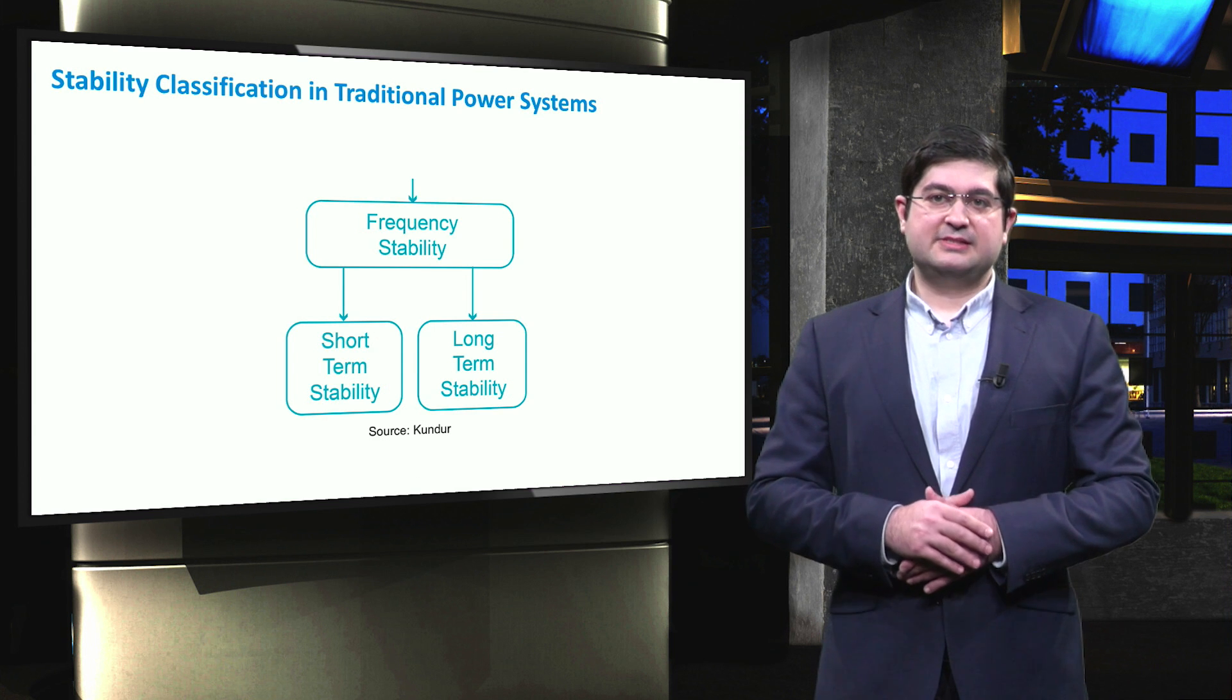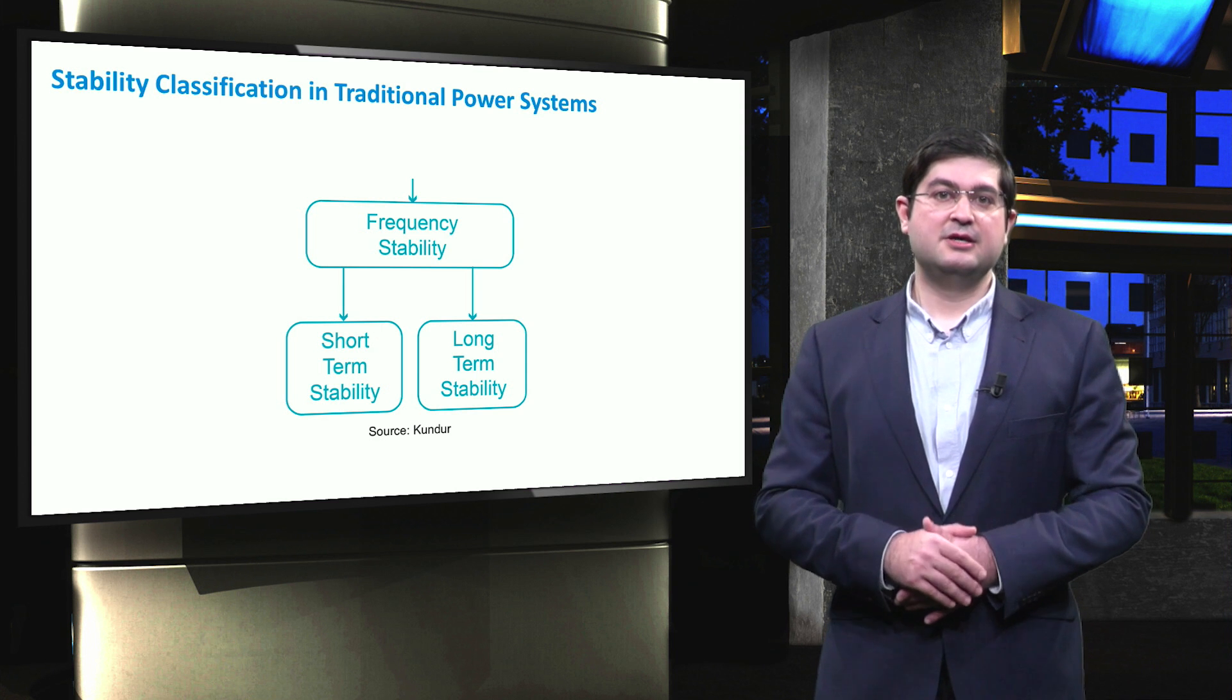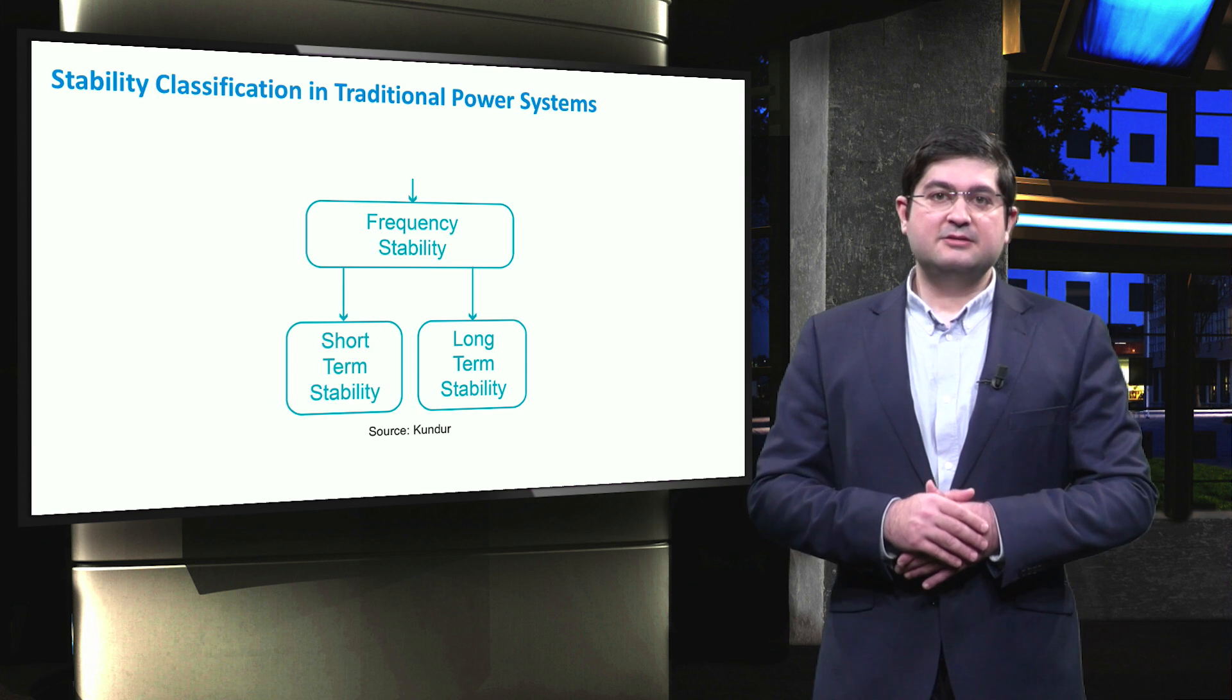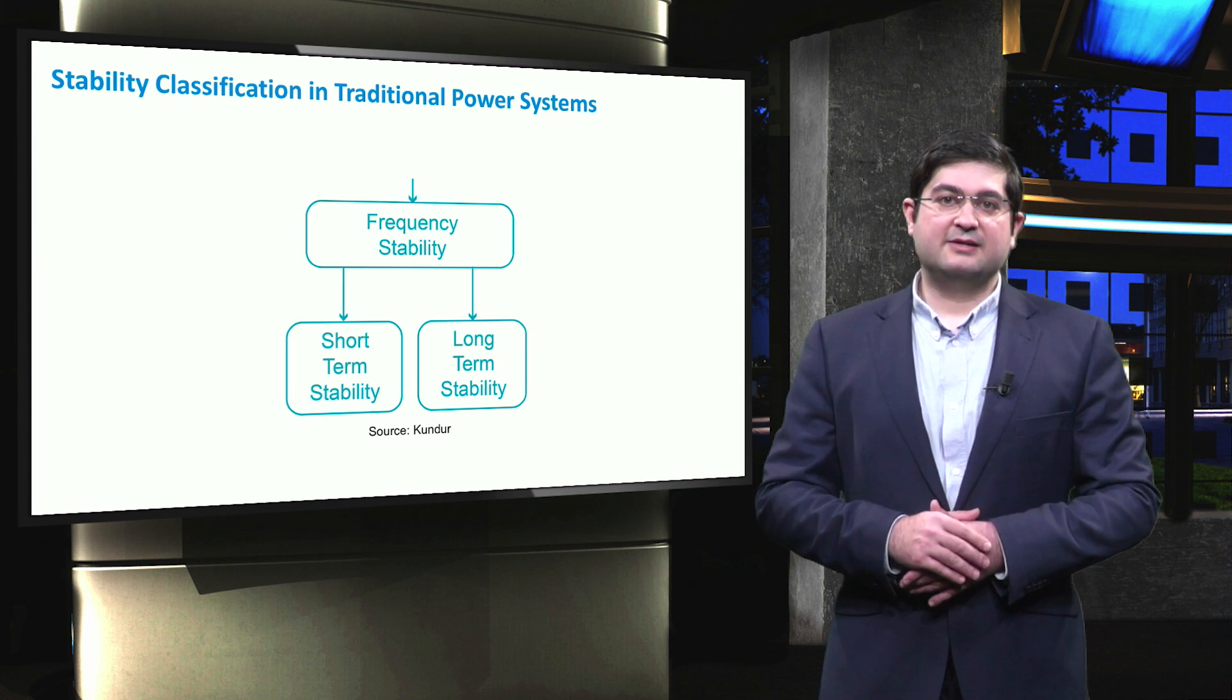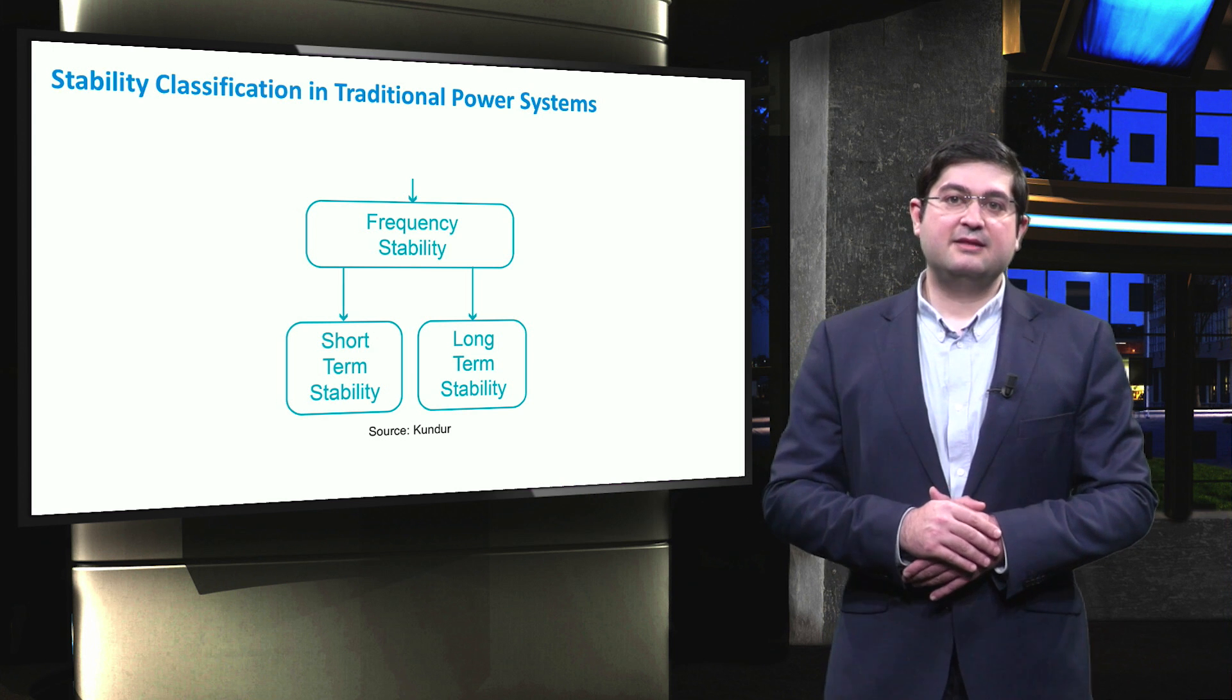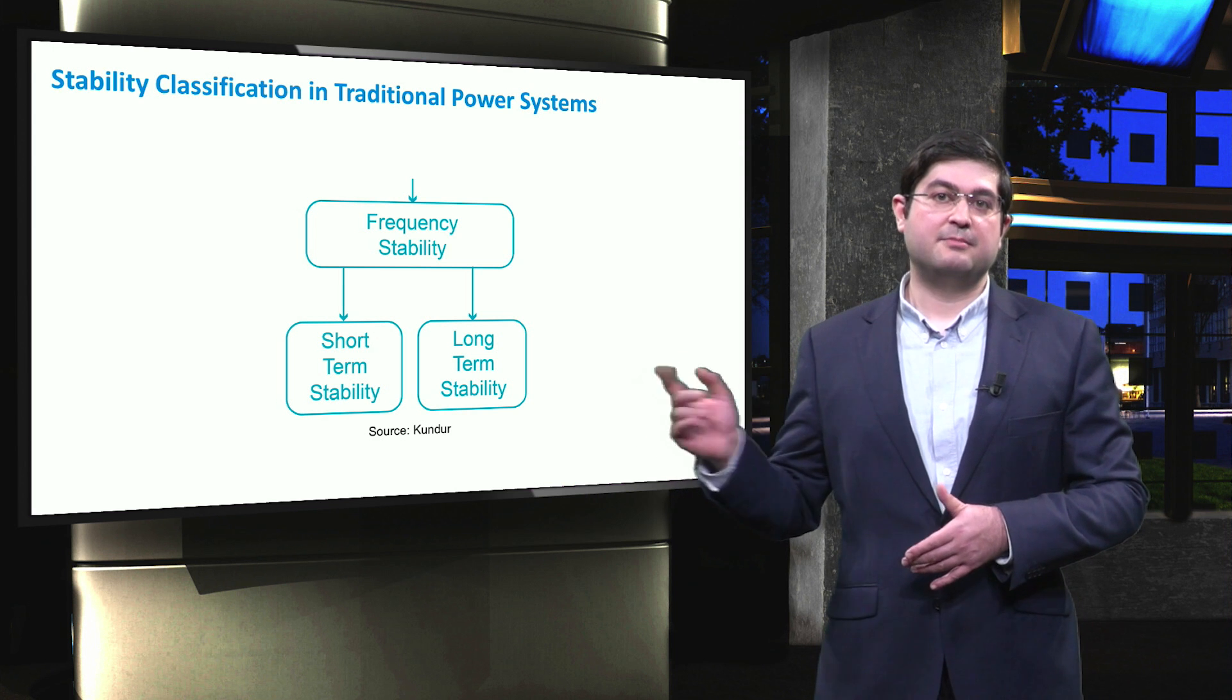Frequency stability can be considered for both short time scale within several seconds or long time scale within several minutes up to hours. In electric power systems, ideally speaking, active power balance between the power produced by generating units and the electrical demand must be instantaneously maintained and satisfied for both short and long time scales.